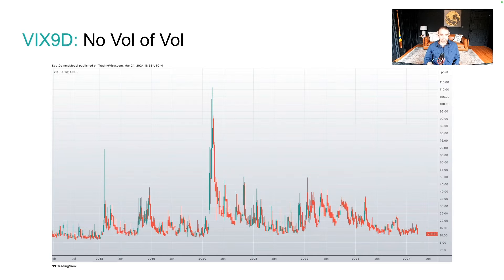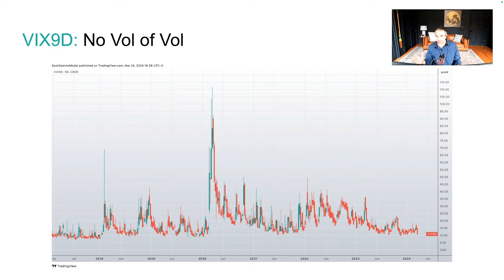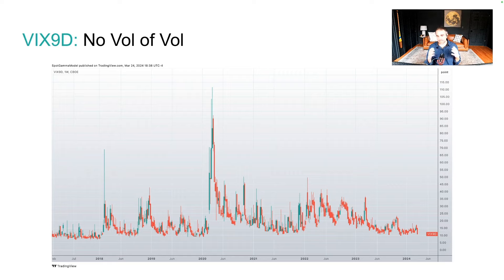There's a lot of discussion around zero DTEs driving the VIX lower and whether the VIX matters anymore. The CBOE has the VIX nine-day, which measures implied volatility for the S&P over the next nine days instead of 30 days, which is what the standard VIX measures.